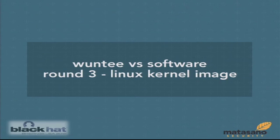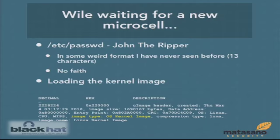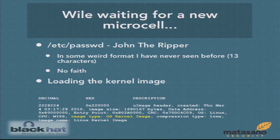While waiting, I remembered there was a Linux kernel image in the bin dump, so I wanted to focus on that. I also sent the /etc/passwd file to John the Ripper. It was in a weird format — a 13-character string where the hash should be, some old-school hashing mechanism. I didn't think it was a legitimate /etc/passwd file — I thought it was dynamically generated at boot. So I left it running in the background on a server and moved forward to look at the Linux kernel image.